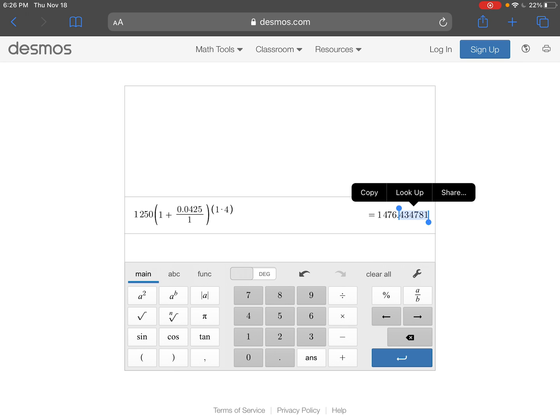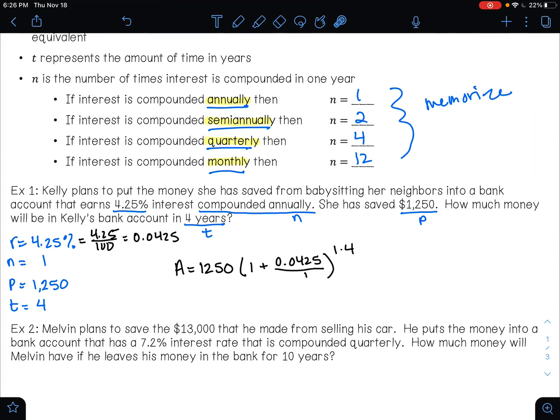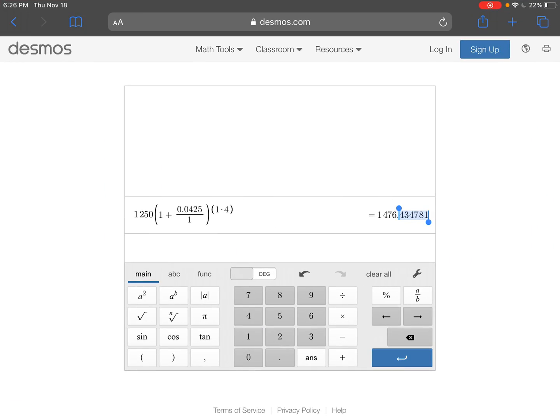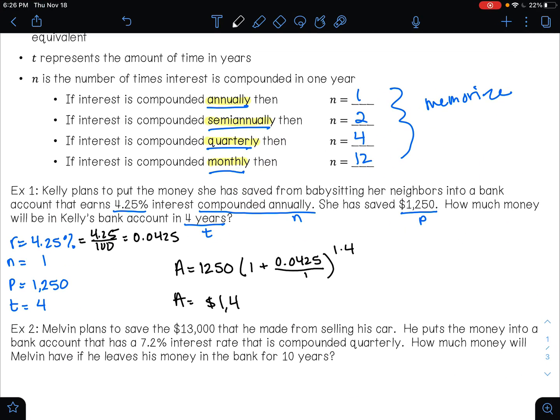In this case, my third decimal spot is four. If it's five or higher, you round up. If it's less than five, you keep it the same. So my answer is going to be $1,476.43. A equals $1,476.43. This is my answer.